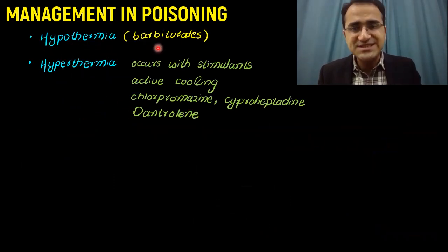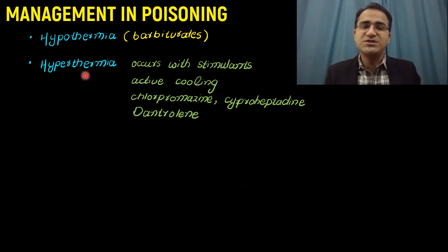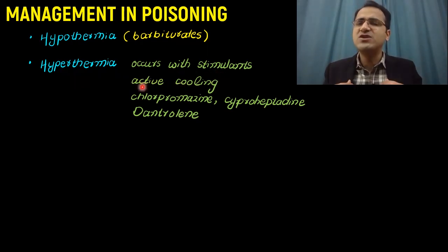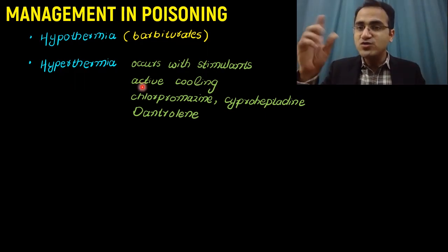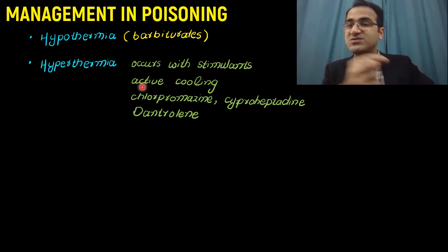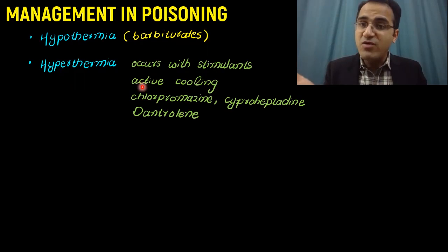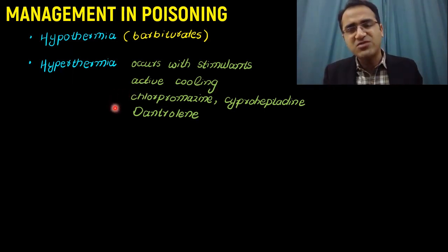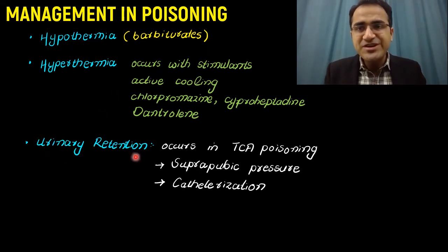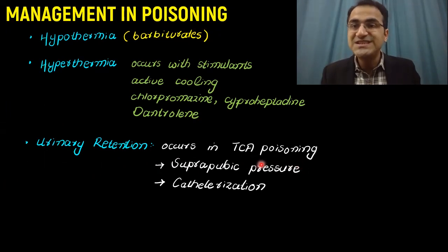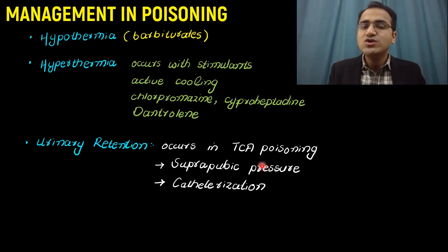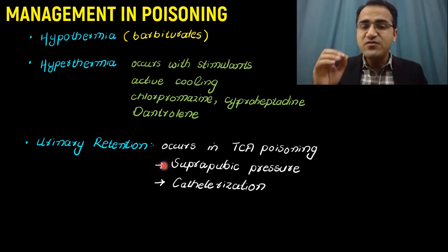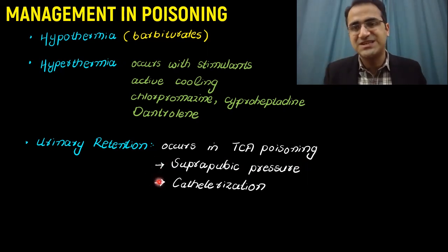If the patient is developing hypothermia, as occurs in barbiturate poisoning, give warm blankets. If developing hyperthermia, as occurs with stimulant drugs, lower temperature by reducing layers of clothing and perform active cooling using wet swabs or alcohol swabs placed in the armpits for evaporative cooling. In very specific cases of malignant hyperthermia, you can use dantrolene. If there is urinary retention — as occurs in TCA poisoning due to anticholinergic effects — apply suprapubic pressure to stimulate the micturition reflex; if that fails, perform catheterization.